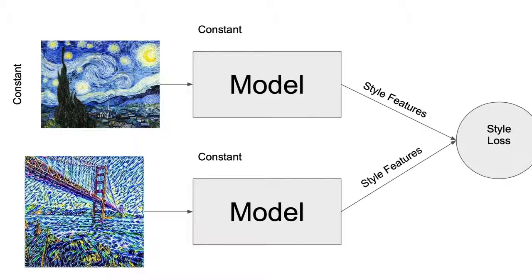So, the main idea is that we take a style image, we input into a model, we output style features. We do the same thing for the output image, we apply it to the model, get out style features for the output image, and together, we get a style loss.